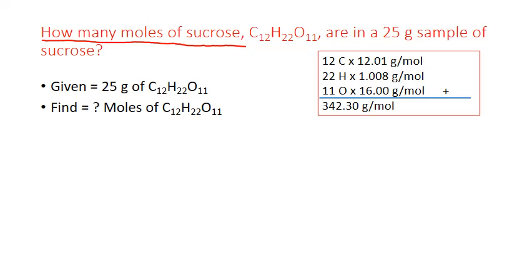So we do 12 carbons from our formula times 12.01, the periodic table mass of carbon. Now notice that I'm using units of grams per mole because I'm actually calculating molar mass. It's the same calculation as formula mass. It's just different units.